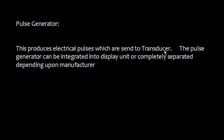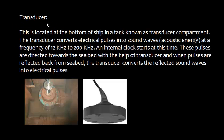There is another part which is the pulse generator, and this produces electrical pulses which are sent to the transducer. The pulse generator can be integrated into the display unit or it can be a completely separate unit depending upon the manufacturer. The transducer is located at the bottom of the ship in a tank known as the transducer compartment. The transducer converts electrical pulses into sound waves.